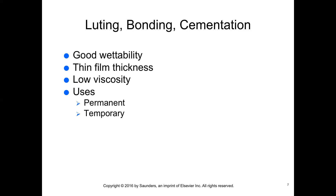Cements used for permanent or temporary luting of fixed prostheses, orthodontic bands, and pins and posts must have good wettability and flow to provide a thin film thickness. When the tooth structure and fixed prostheses are in intimate contact, a microscopic space exists — this is the tooth-restoration interface. The primary purpose of luting cement is to fill that interface. Cements mixed to primary consistency must have thin enough viscosity to flow into a film thickness of 0.25 micrometers or less.